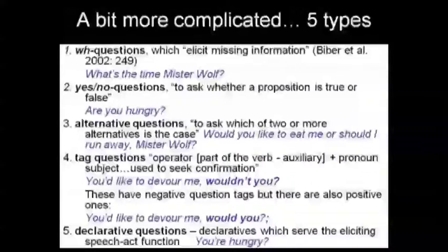We also have a third category, and we're going to code our questions one, two, three, four, or five according to these categories. Number one is WH questions, number two is yes-no questions. Our third category is alternative questions — questions with an 'or' in them, so we can have two alternatives. For example: 'Are you hungry or have you had enough to eat?'